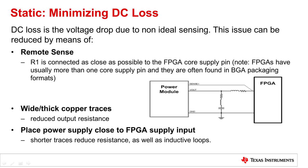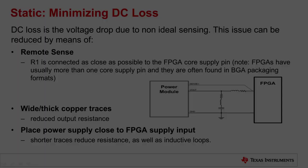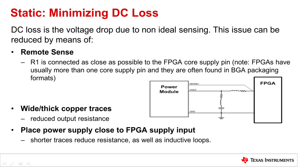The last effect to take into account — and to avoid — is the DC losses: the voltage drop due to non-ideal sensing. This issue can be reduced by means of remote sensing, where the feedback of the error amplifier is directly connected to the FPGA core supply pins. Alternatively, wide and thick copper traces reduce the output resistance of the power supply, and the power supply should be placed as close as possible to the FPGA or SOC, because shorter traces reduce both resistance and inductive loops.